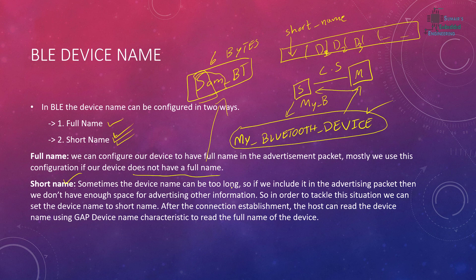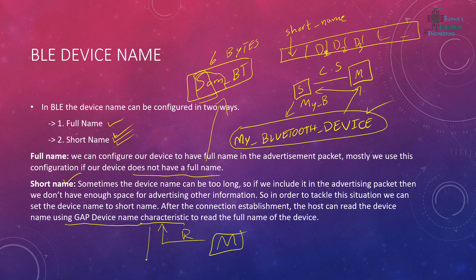Sometimes the device name can be too long, so if we include it in the advertisement packet we won't have enough space for advertising other information. To tackle this, we can set the device name as a short name. After connection establishment, the host can read the device name using the GAP device name characteristic. The master device reads this characteristic and then receives the full device name.